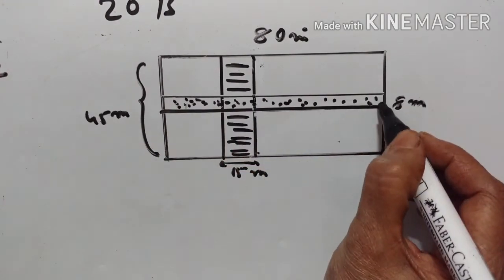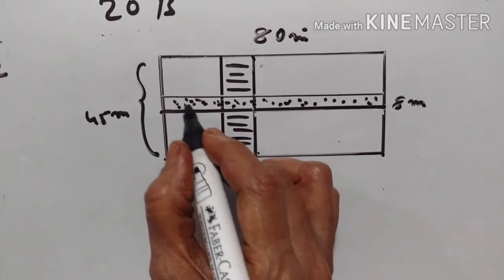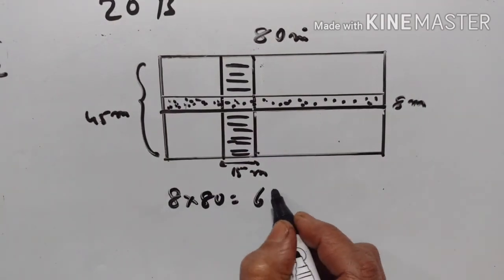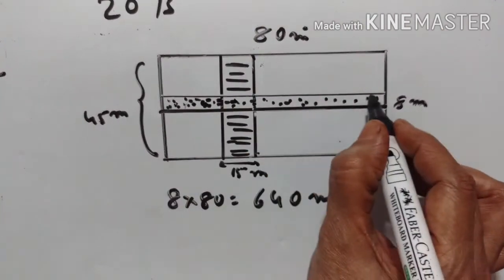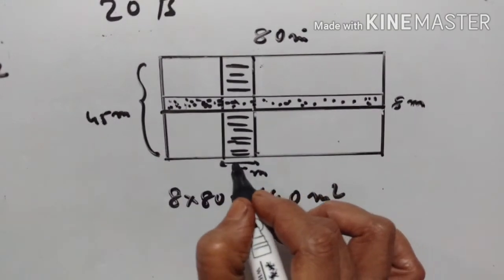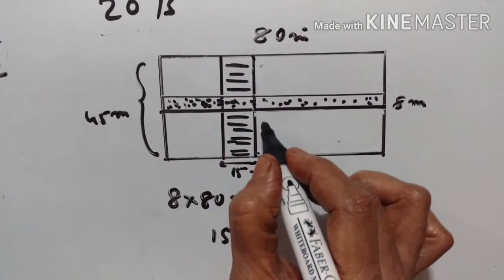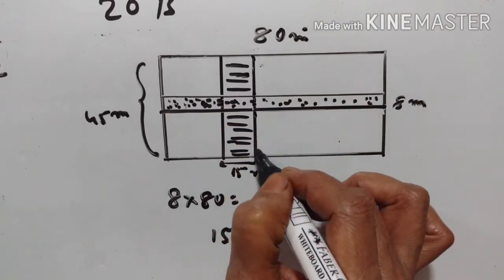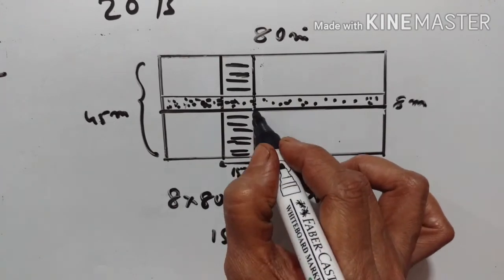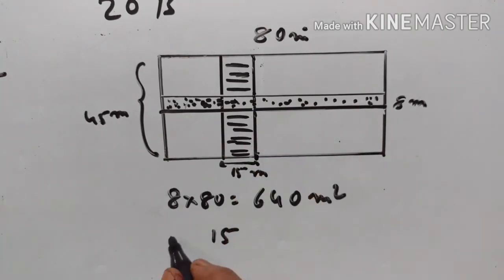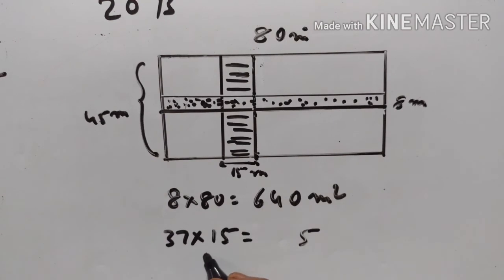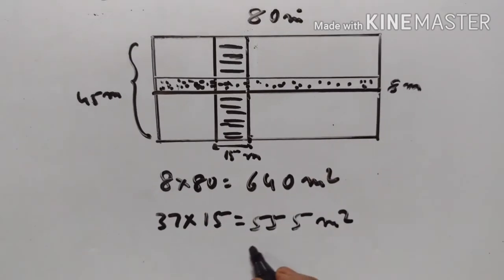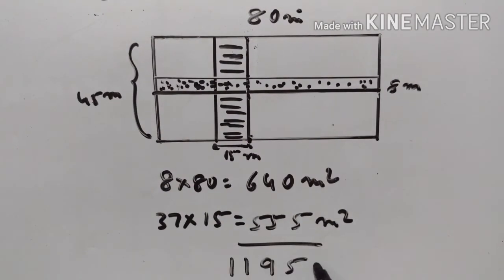The area of the horizontal path is 8 into 80 equals 640 square meters. For the vertical path, the breadth is 15 meters and the length is 45 minus 8 equals 37 meters, giving area of 15 into 37 equals 555 square meters. So the total area of the shaded portion is 640 plus 555 equals 1195 square meters.